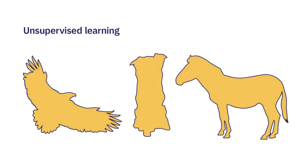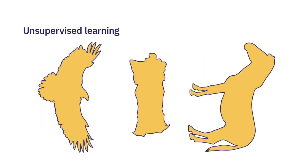Therefore, unsupervised learning allows us to identify patterns and structures in data, and with them, to understand which elements are similar to each other, and consequently, which elements are distinct from each other. This is the type of problem that unsupervised learning seeks to solve.